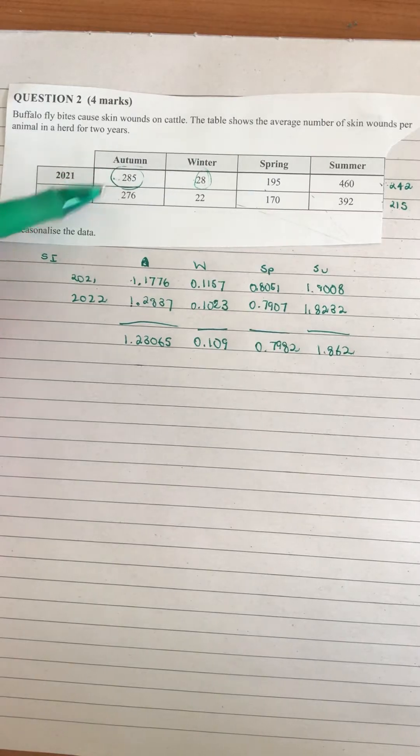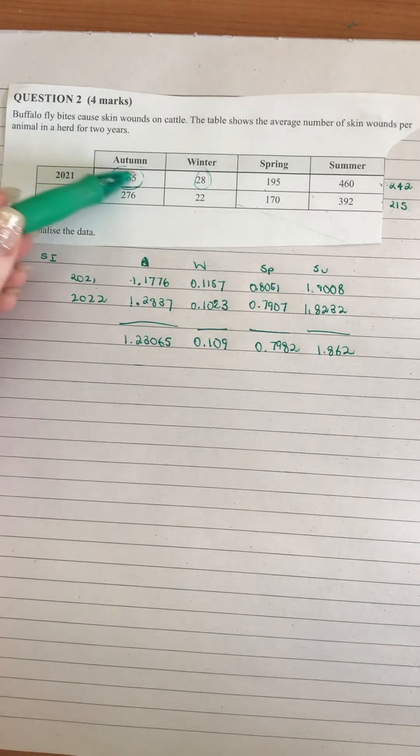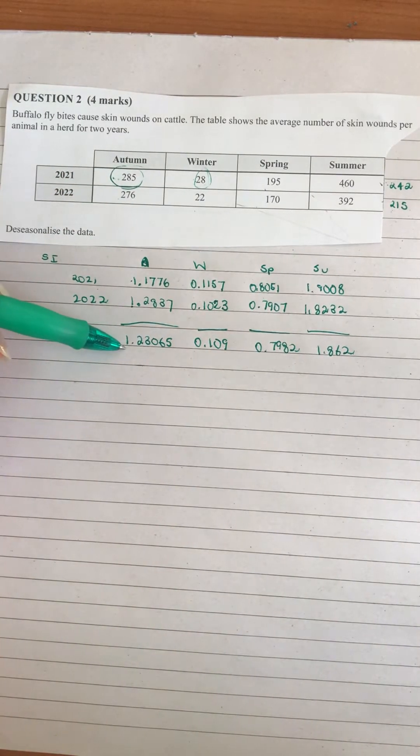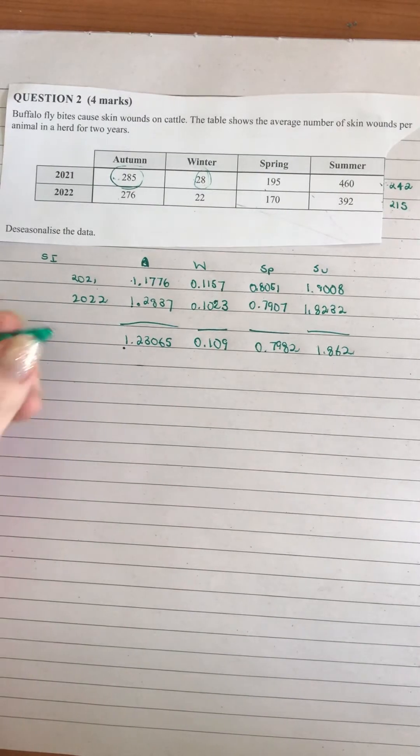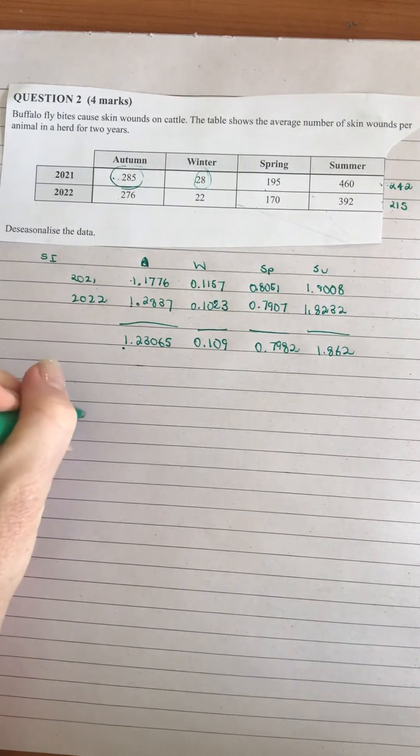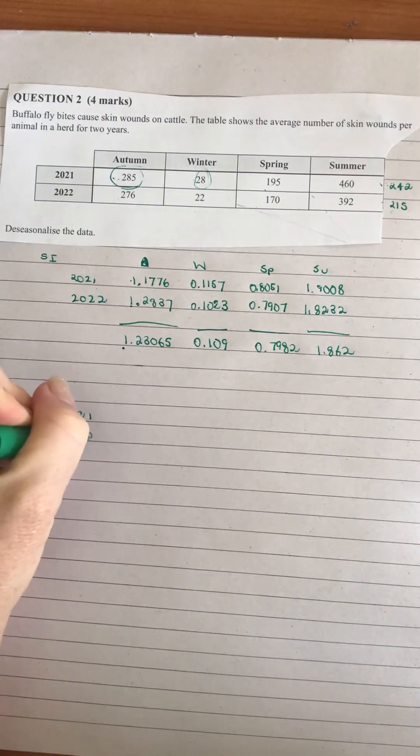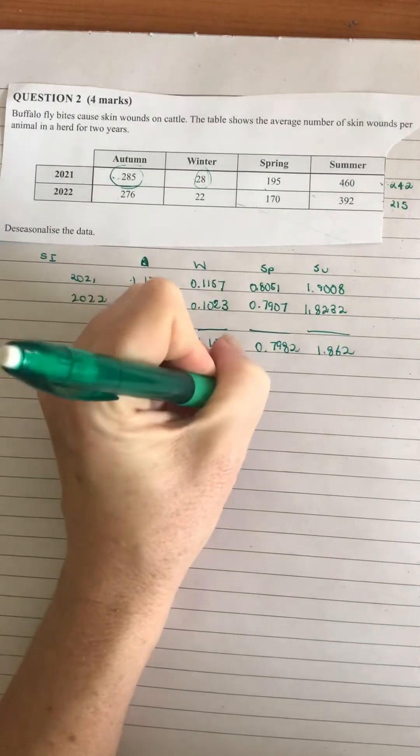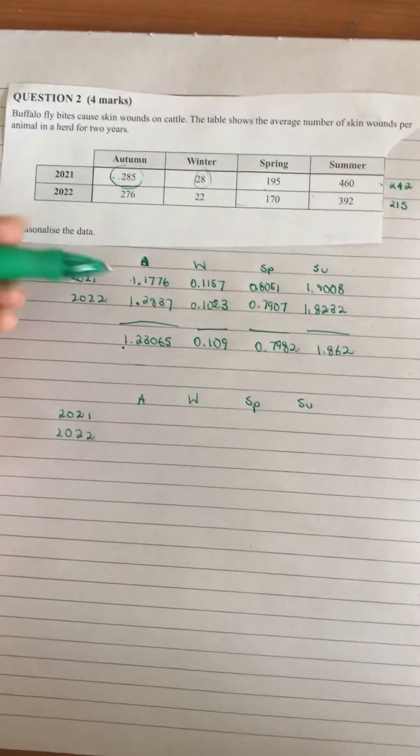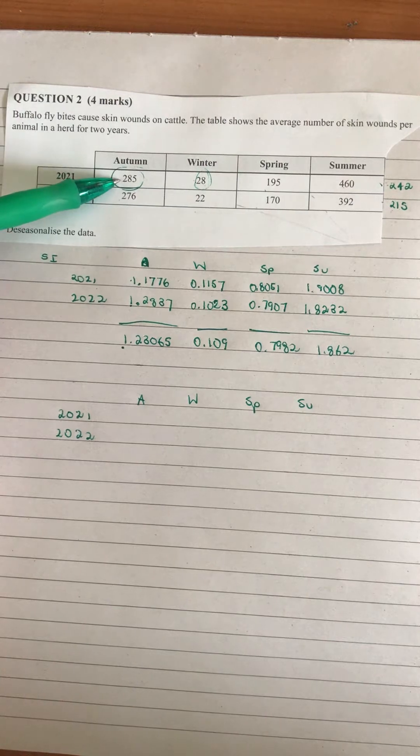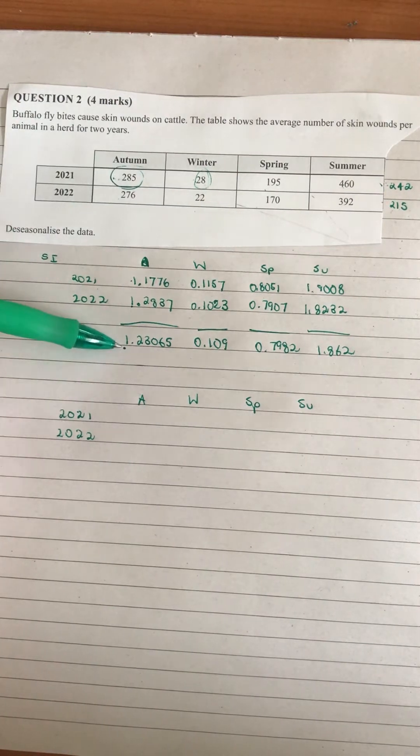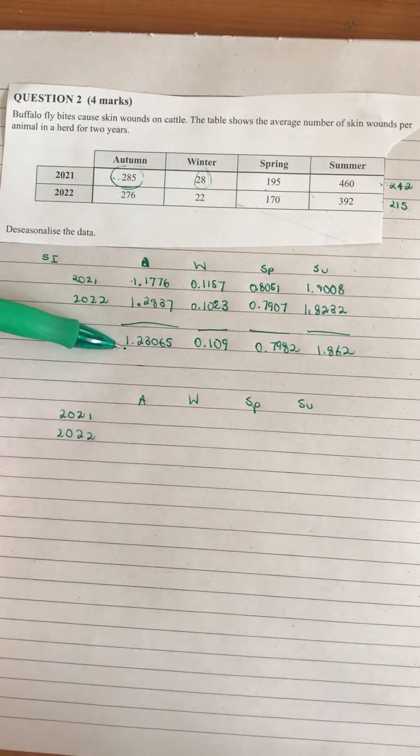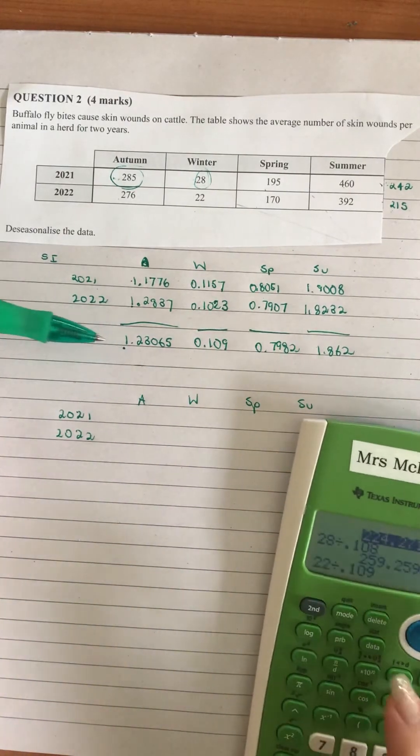Then we want to de-seasonalize each of these values. We're going to grab that number and divide by the seasonal index. So for 2021 and 2022, autumn, winter, spring, summer, we'll get our value for autumn divided by 1.23065.